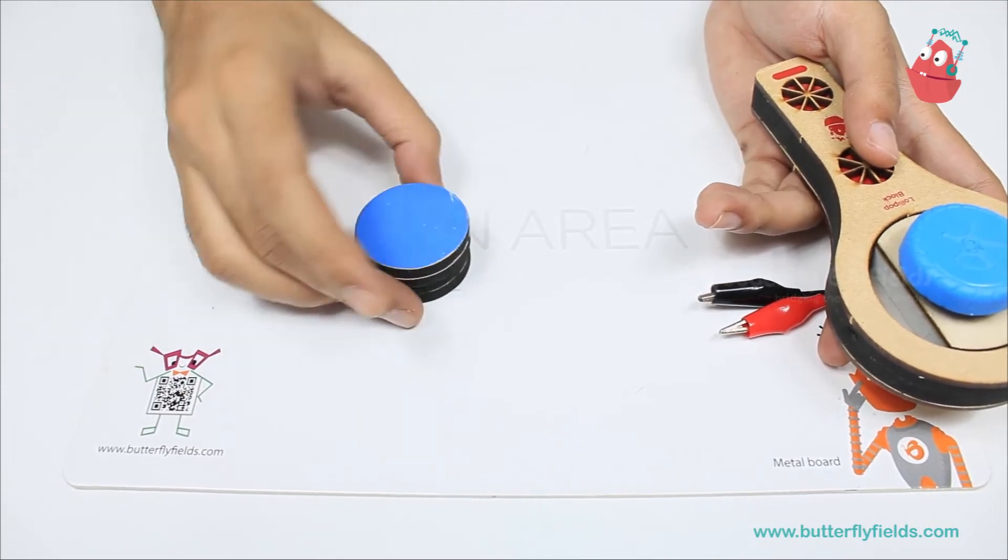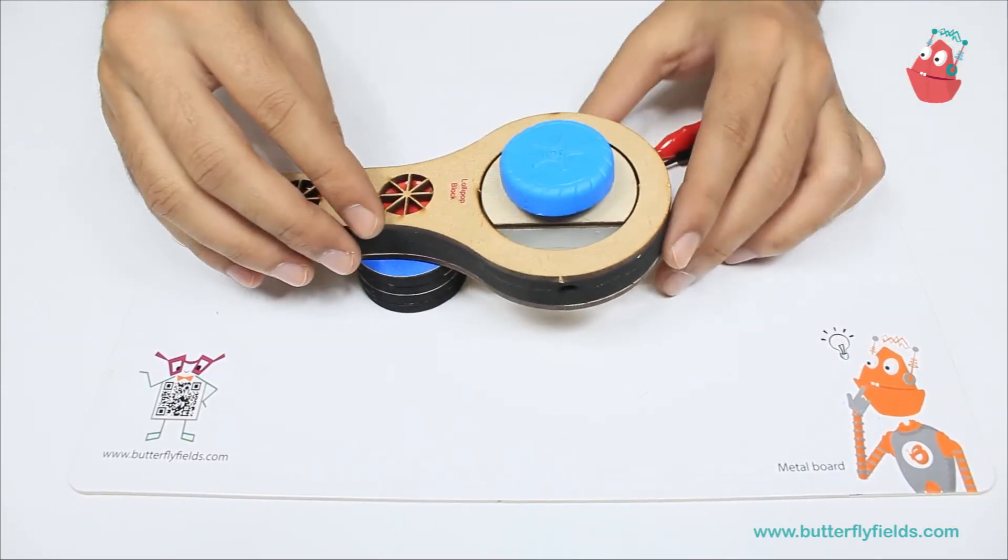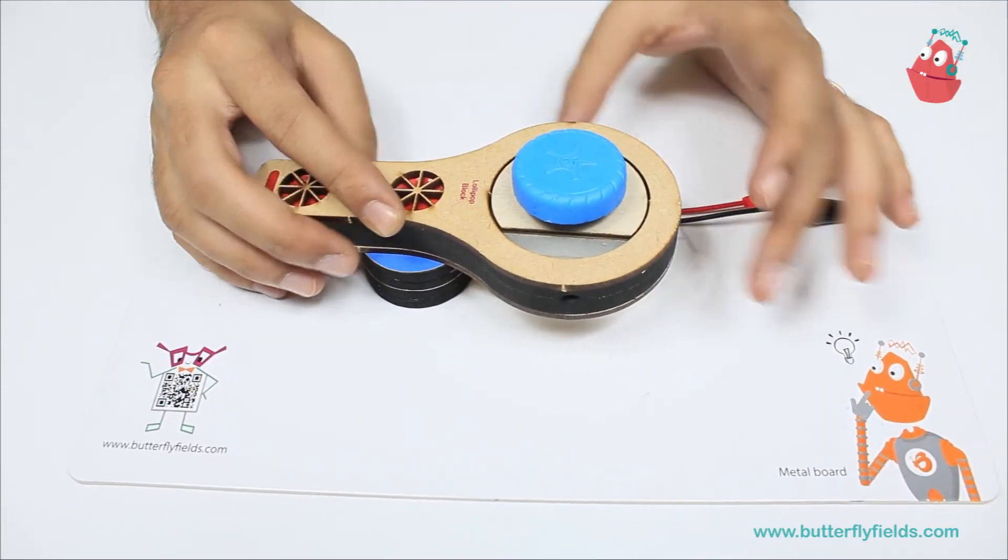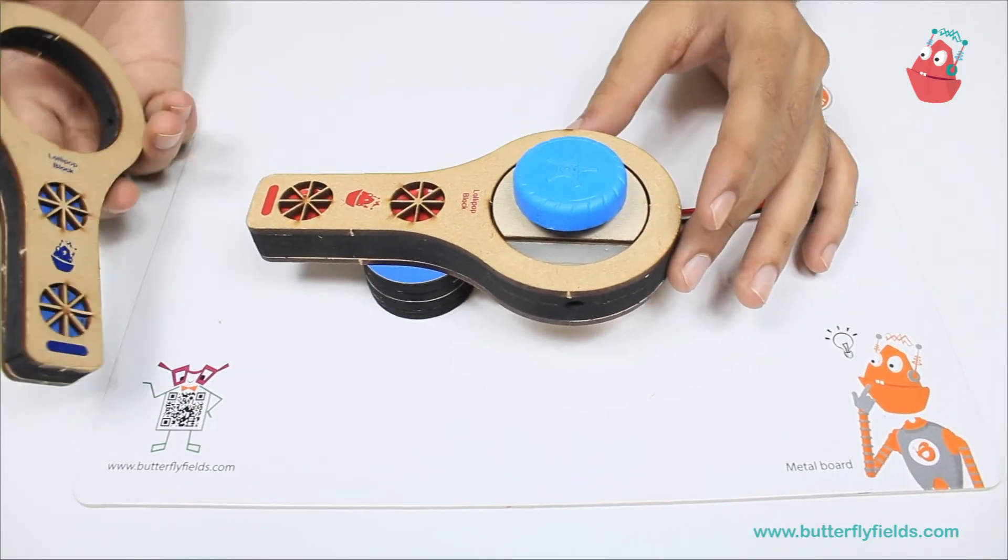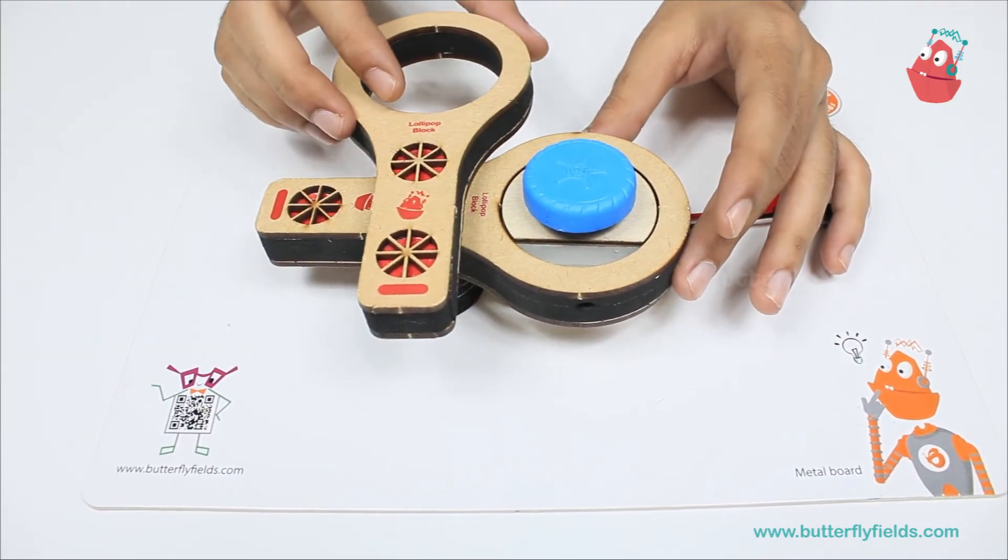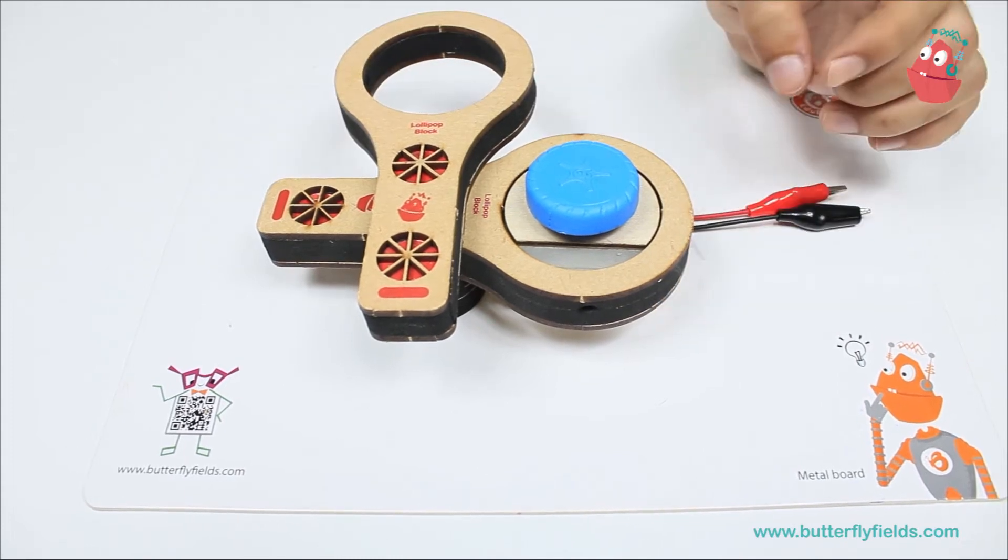Next we'll place the magnetos, and on top of the magnetos we are going to place our motor. Then we need to place another lollipop block perpendicular to this one.